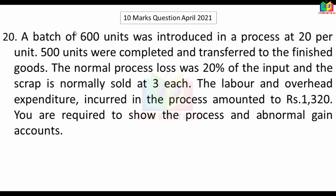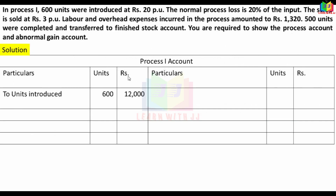In the process, 600 units were introduced at Rs.20 per unit, and 500 units were completed and transferred to finished goods. Setting up the process account: 600 units at Rs.20 gives Rs.12,000 on the debit side.